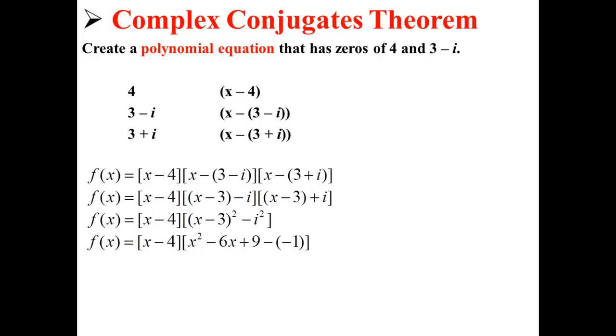Now we factor this out to get x minus 4 times x squared minus 6x plus 9 minus negative 1. We simplify further to get x minus 4 times x squared minus 6x plus 10.